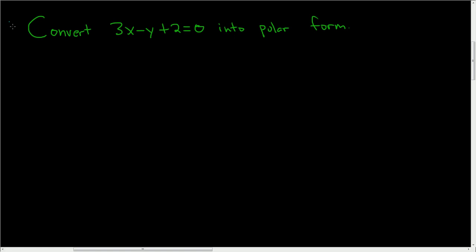Convert 3x minus y plus 2 equals 0 into polar form. Let's go ahead and do it. Solution.